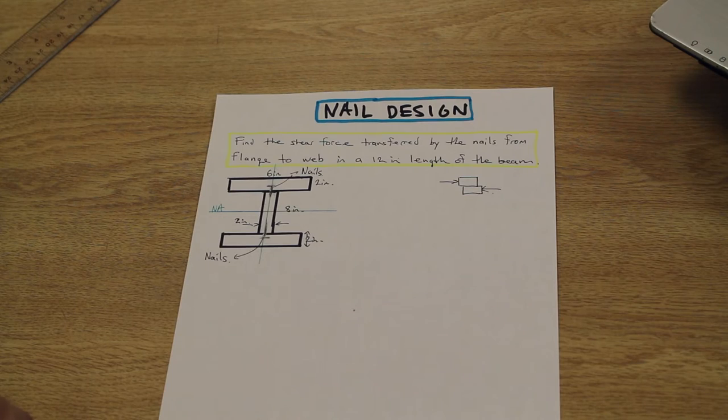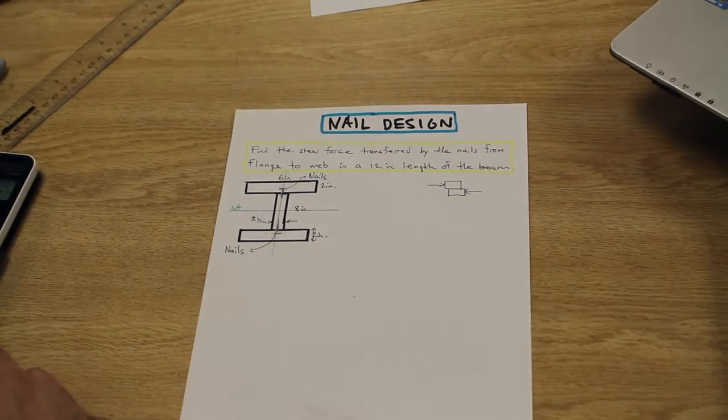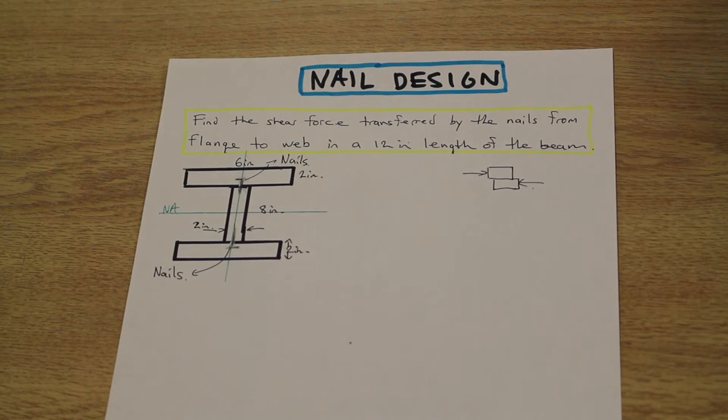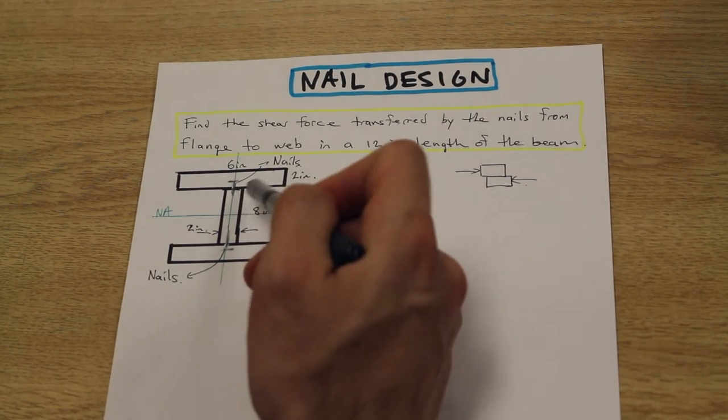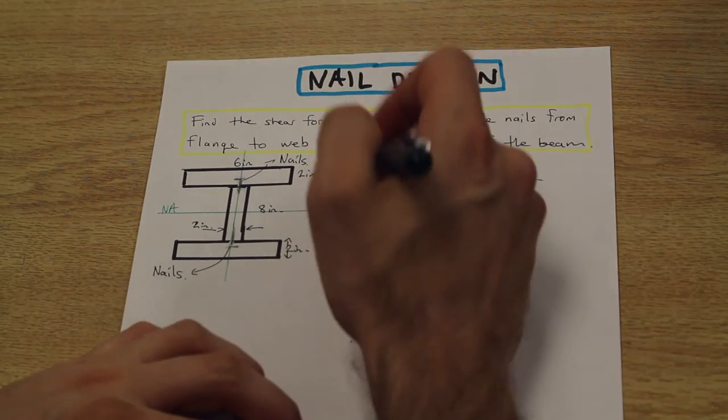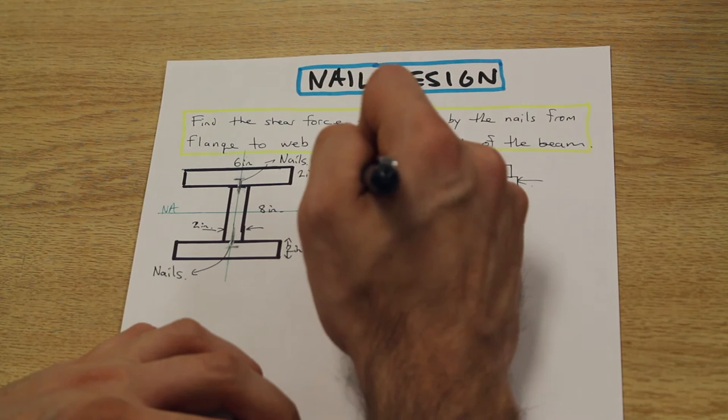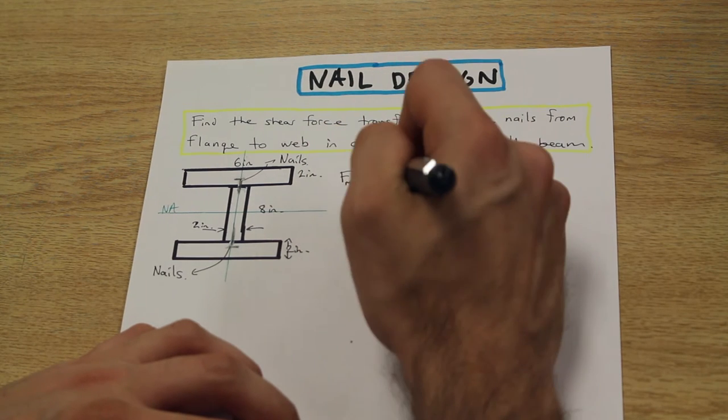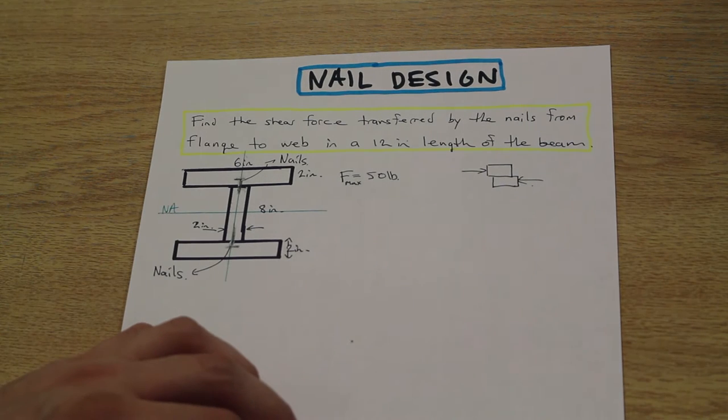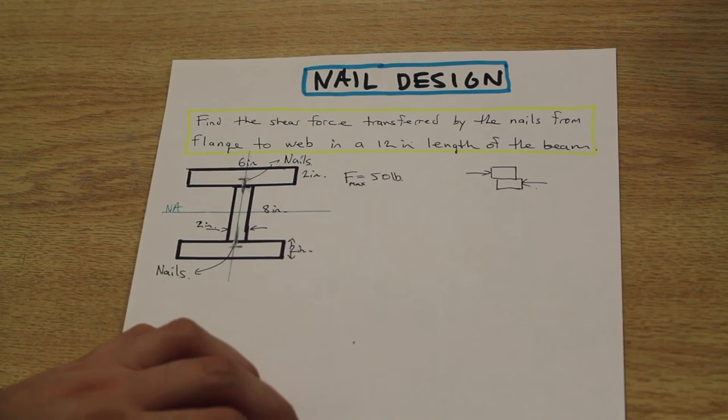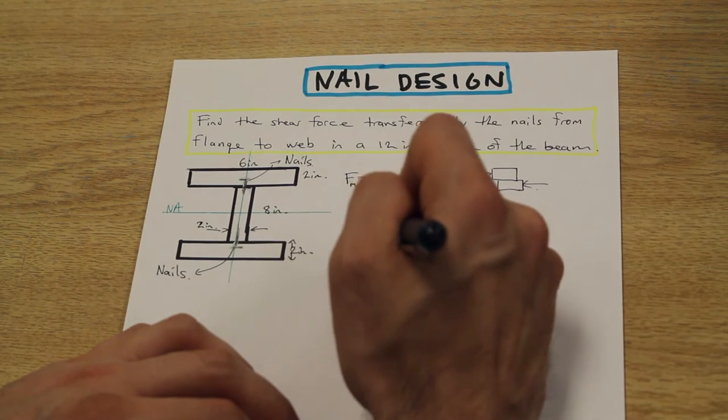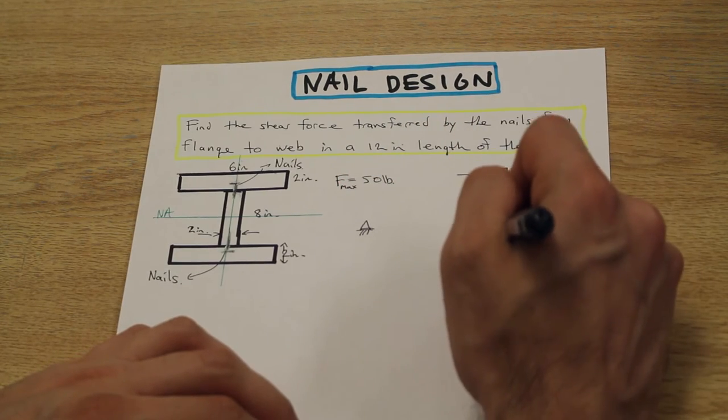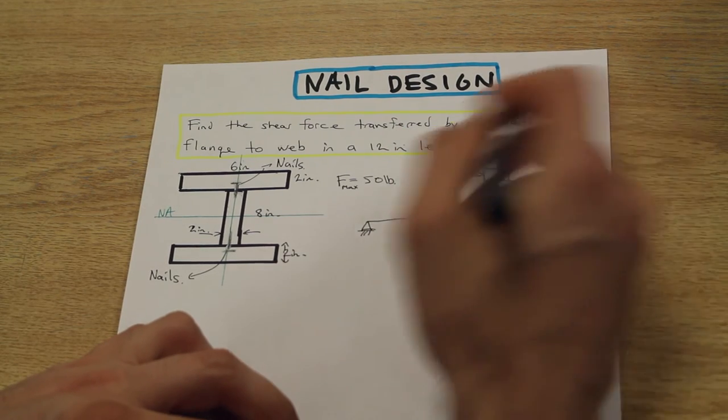Let's look at how to solve this. We're given that the flanges of the beam are fastened to the web with nails that can safely transmit a shear force of 50 pounds. So the maximum shear force of the nails is 50 pounds - that's useful information. The beam is simply supported and carries a 750 pound load at the center of its 12 foot span. Whenever we see a simply supported beam, the question is referring to a roller and a pin with some kind of beam, and the supports are on the ends of the beam.